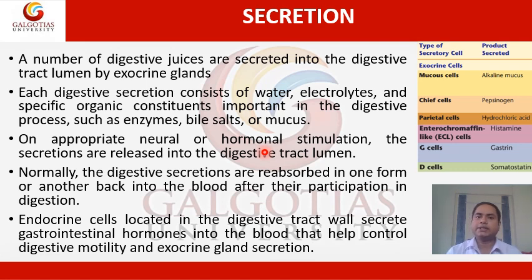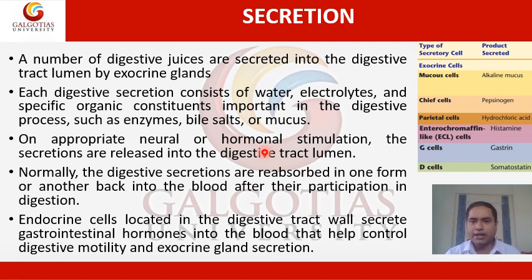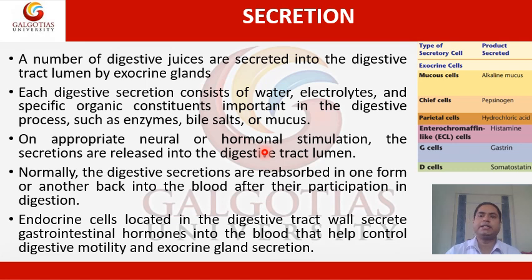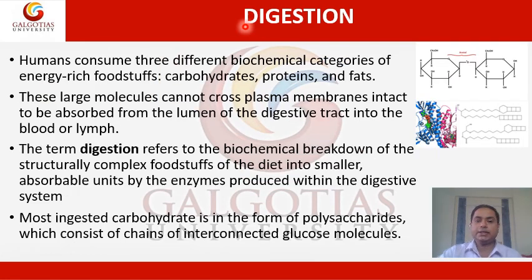Endocrine cells located in the digestive tract wall secrete gastrointestinal hormones into the blood that help control digestive motility and exocrine gland secretion.